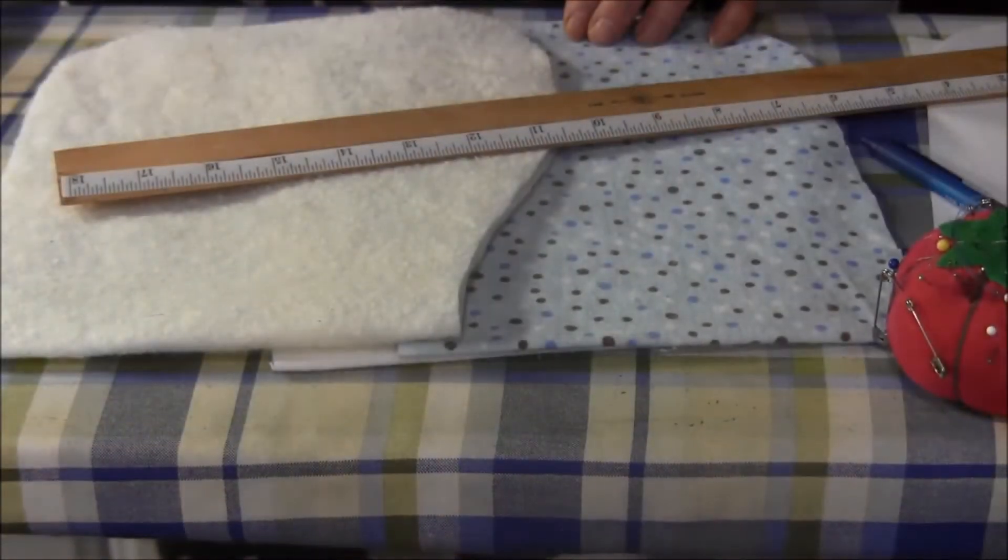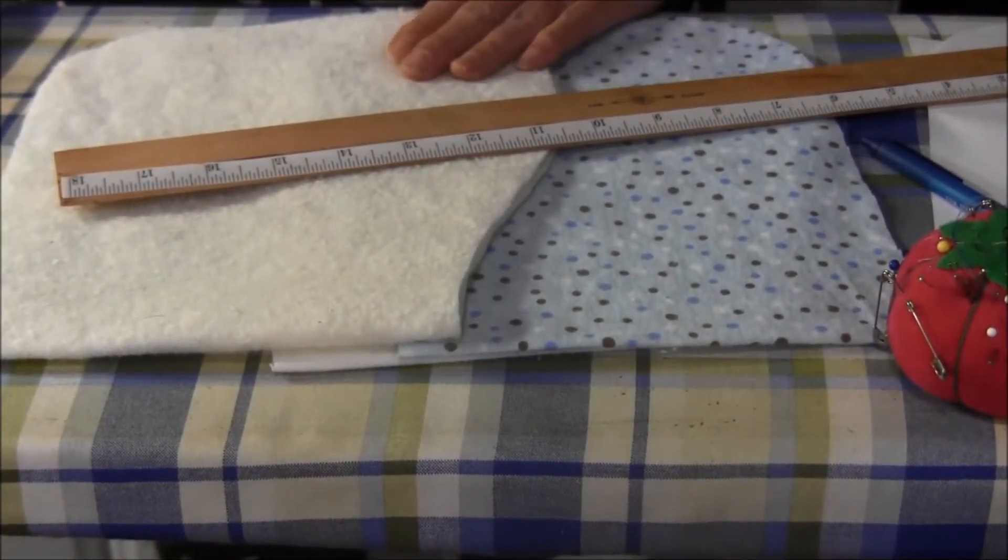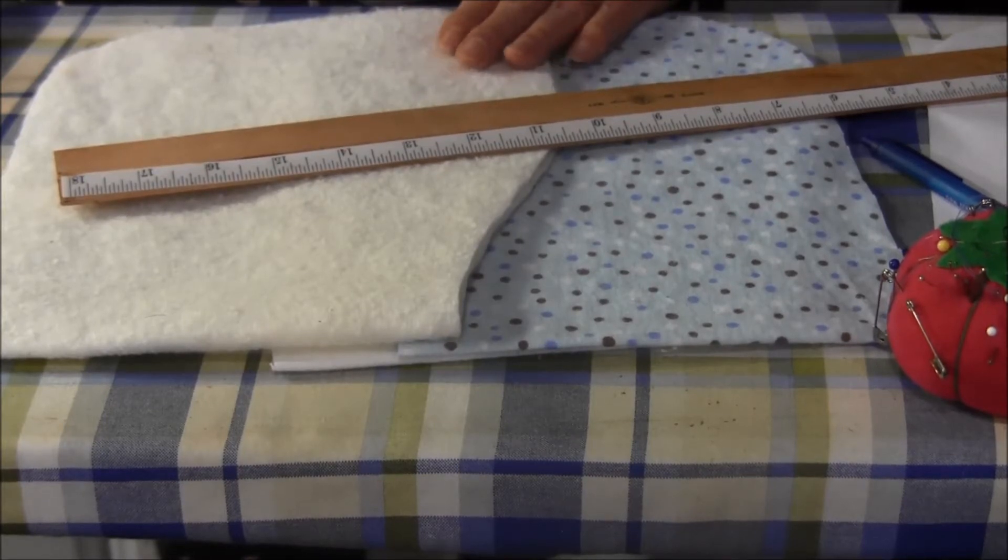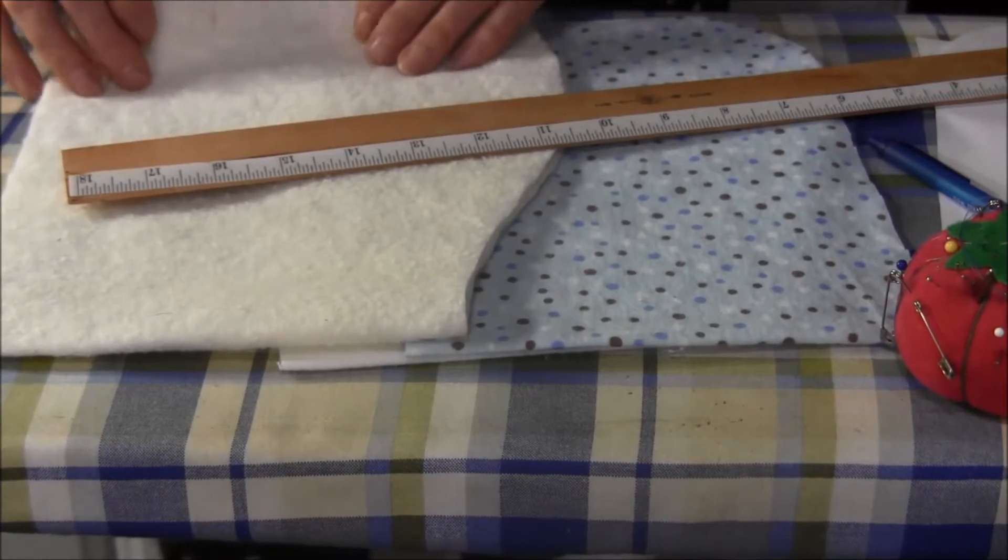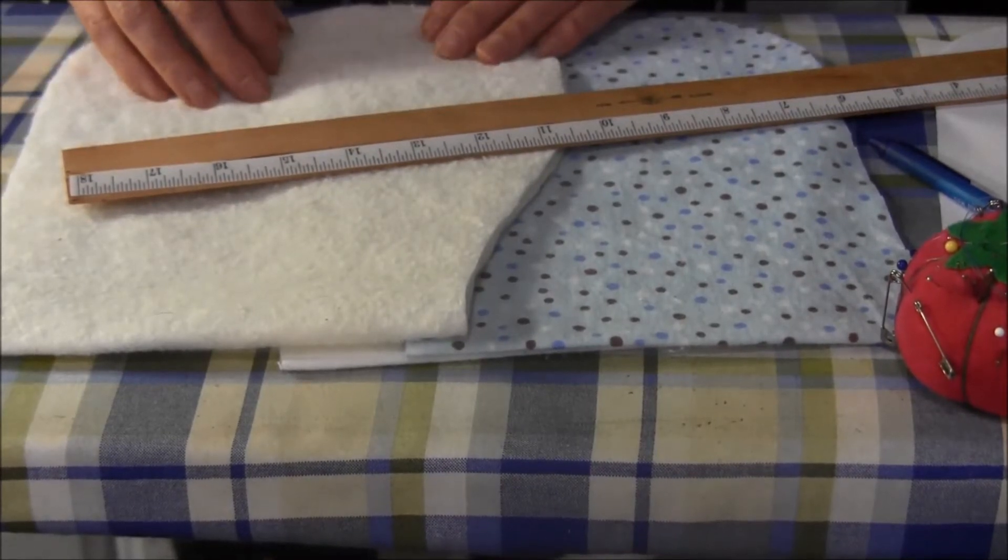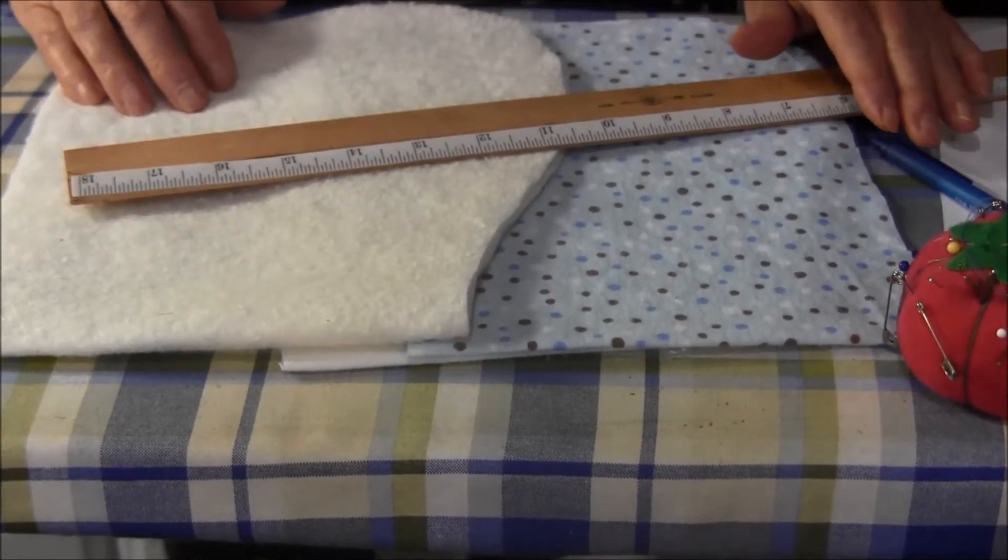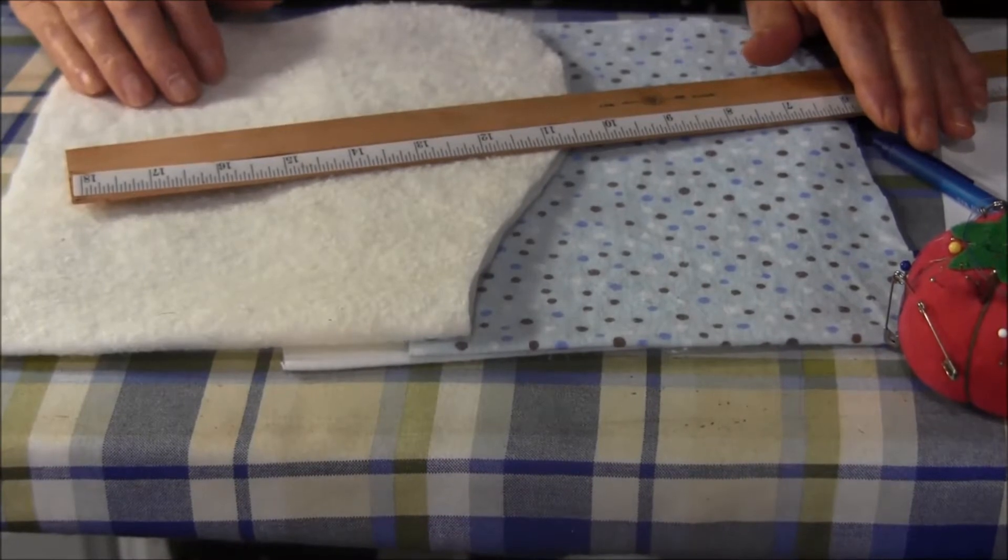What you're going to need is some soft flannel fabric, some low loft cotton batting that's optional, paper, ruler, pencil or pen, and basic sewing supplies.